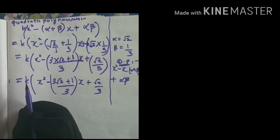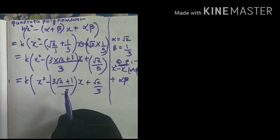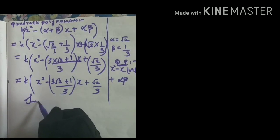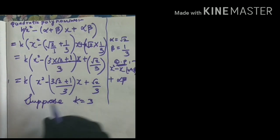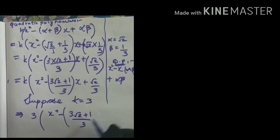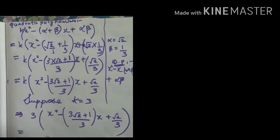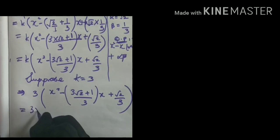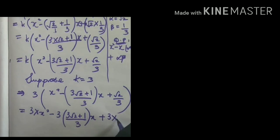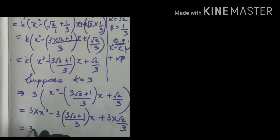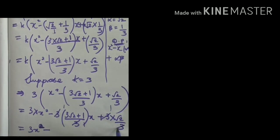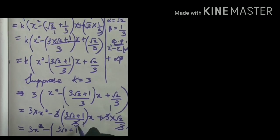I said k can be any real number. Here I will assume k equals 3, because in my equation I have 3 in the denominator in both terms. So substituting k equals 3: 3 into x squared minus (3 root 2 plus 1 by 3) into x plus root 2 by 3. Multiplying 3 through each term: 3 times x squared is 3x squared; 3 times (3 root 2 plus 1 by 3) — the 3s cancel — leaving (3 root 2 plus 1) into x; and 3 times root 2 by 3 — the 3s cancel — leaving root 2.